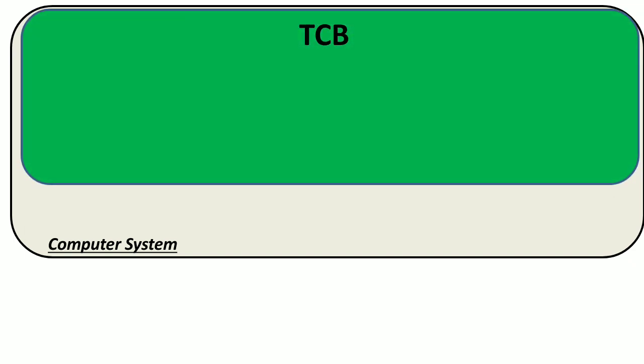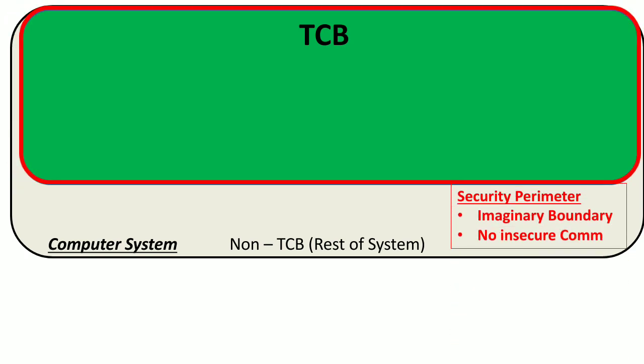This is an information system or a computer system. TCB is basically a subset of this computer system which comprises of critical and sensitive hardware, software, and controls of this computer system. This TCB is separated from the rest of the computer system or non-TCB components using the security perimeter.